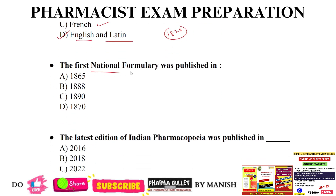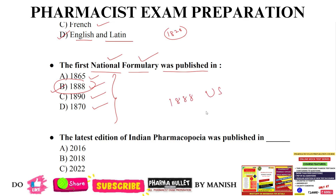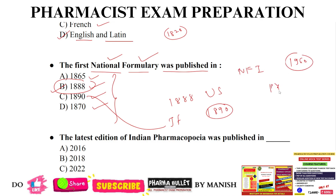Next question: the first national formulary was published in 1865, 1888, 1890, or 1870? The correct answer is 1888, option B — the first national formulary was published in 1888 by the US. The first Japanese formulary was published in 1890. And the first national formulary of India was published in 1960. These are all previous year questions.